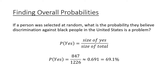While 0.691 is the answer a math lab would typically want, I like to convert to percentages because they're more useful in conversation. So approximately 69.1% of the people surveyed said that they do believe that discrimination against black people in the United States is a problem.